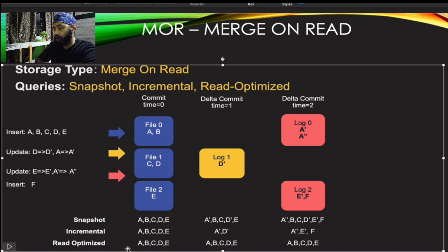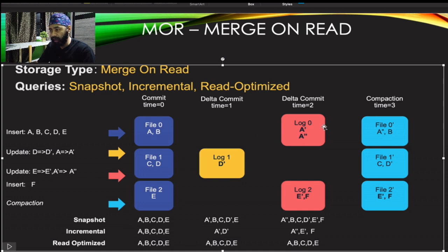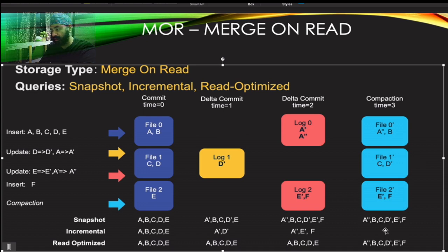When compaction runs — either manually triggered or automatically based on your configuration — Hoodie merges all the log files and writes a new compacted data file with the latest information. After compaction, the read-optimized query will also return the fully updated data. Incremental will not return any new data at compaction time since no new changes are being committed. That covers how Copy on Write and Merge on Read work.